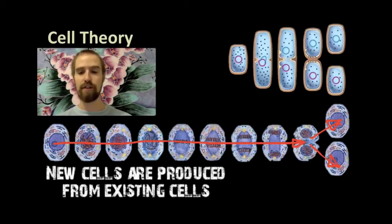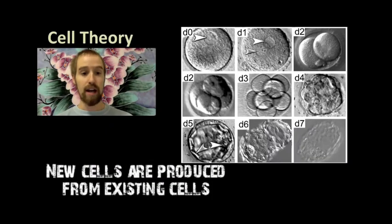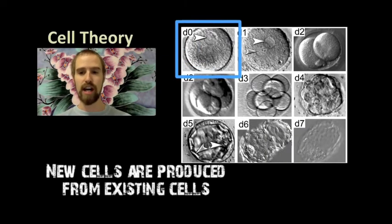Suffice it to say that wherever the first cells came from, according to cell theory, all other cells in existence today were produced by previous generations of cells, all the way back as far as we can go. In our own life, if we go back far enough, we find a single cell, much like the one generic animal cell we saw at the very beginning of this video.